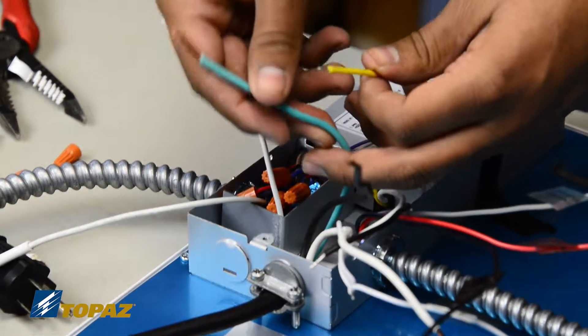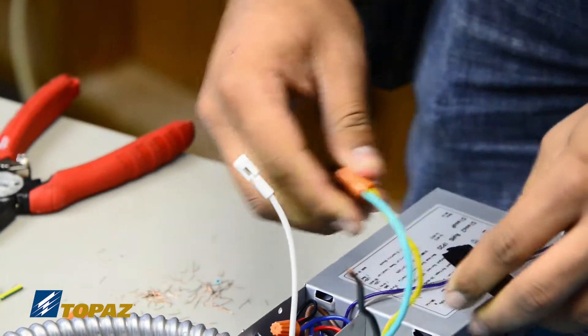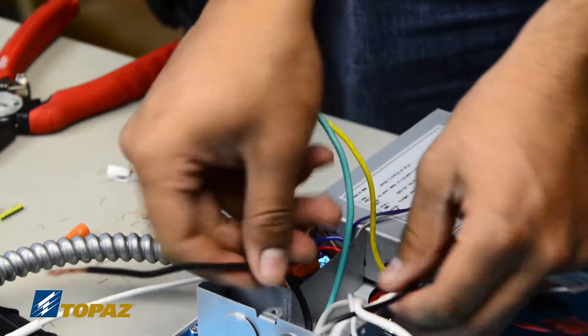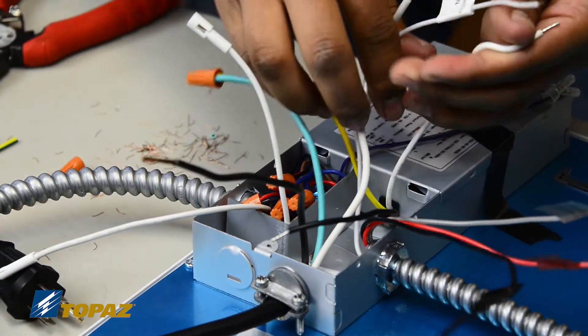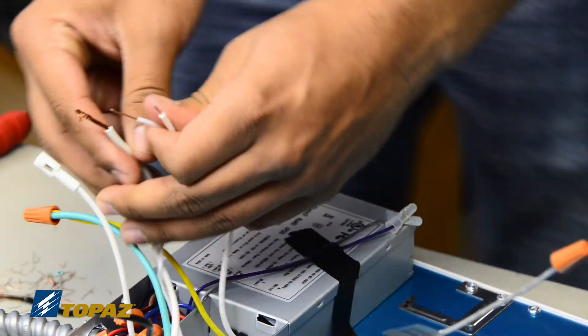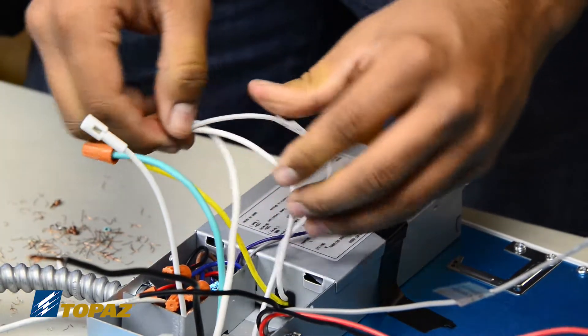Moving over to the line voltage compartment, we're going to first start with the grounding. Next would be taking the neutrals, the grounded conductor. We have a total of three of them, one from the power source, one from the whip, and one from the driver.